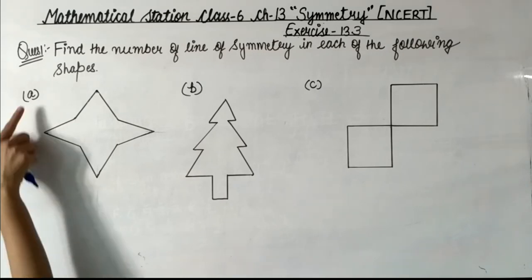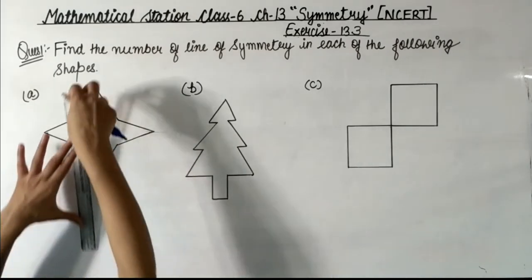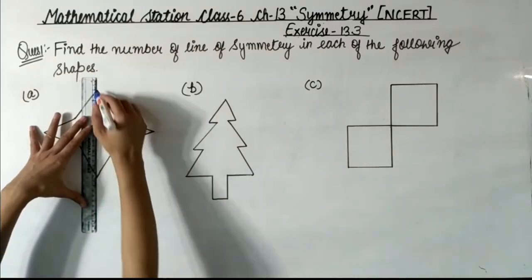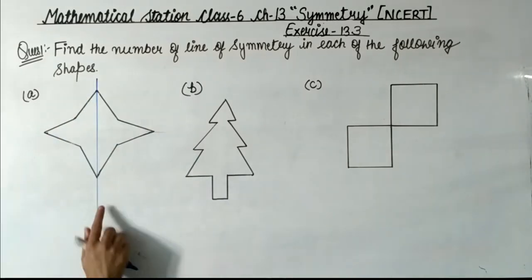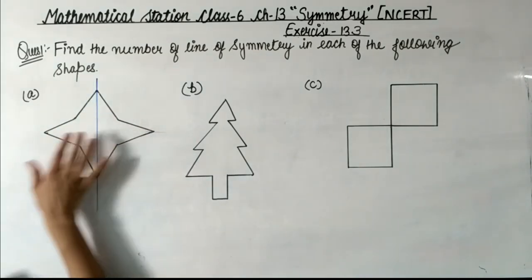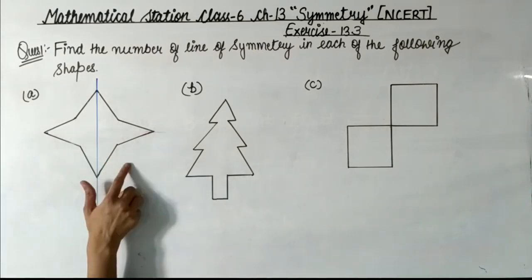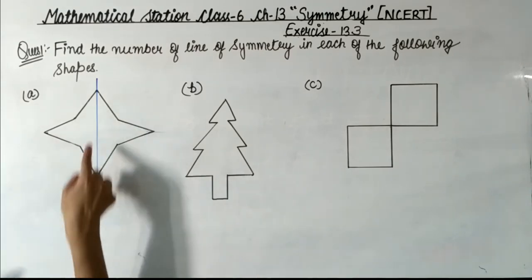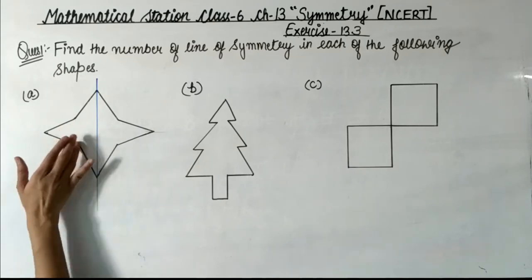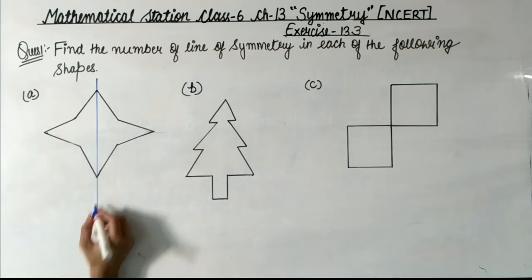First is Part A. Here we have a star. We can draw a vertical line of symmetry. The star has a half part on the left side and half part on the right side, so this vertical line will be our line of symmetry.